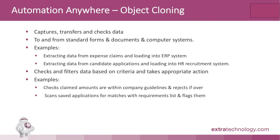A popular and highly effective feature of Automation Anywhere is object cloning. Object cloning is a core capability of the platform and features prominently in most implementations. It's used to automate the capture and transfer of information between standard documents and forms and the company's computer systems. Common examples include automating the upload of expense forms into the ERP system, or — the subject of today — automating the processing of candidate job applications into the HR recruitment system.